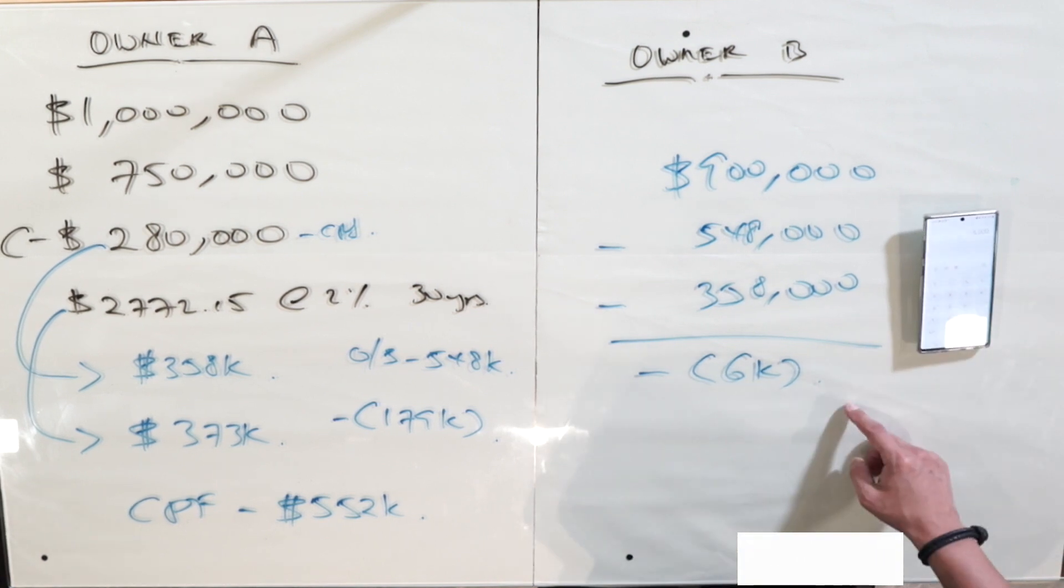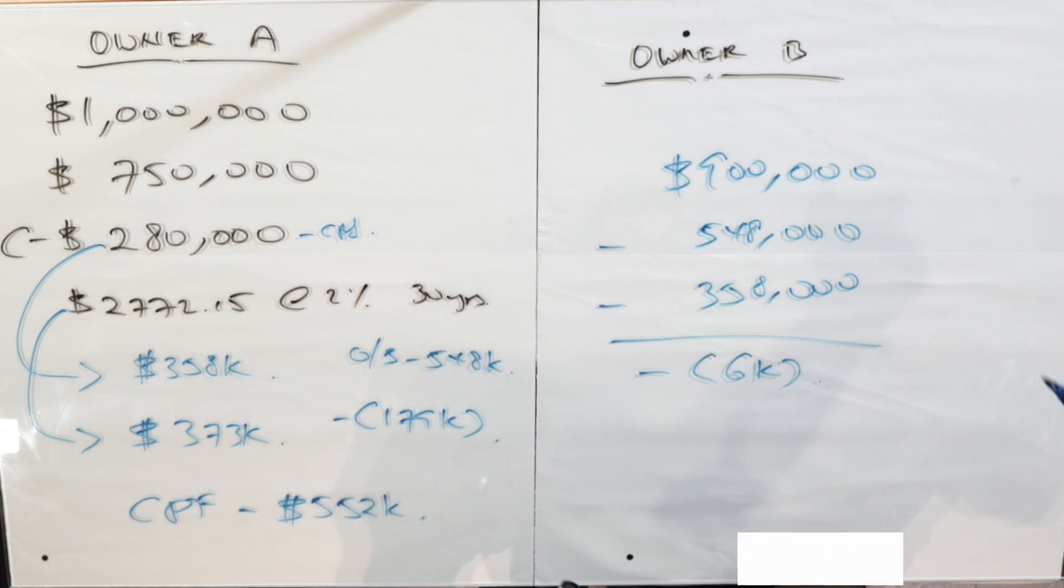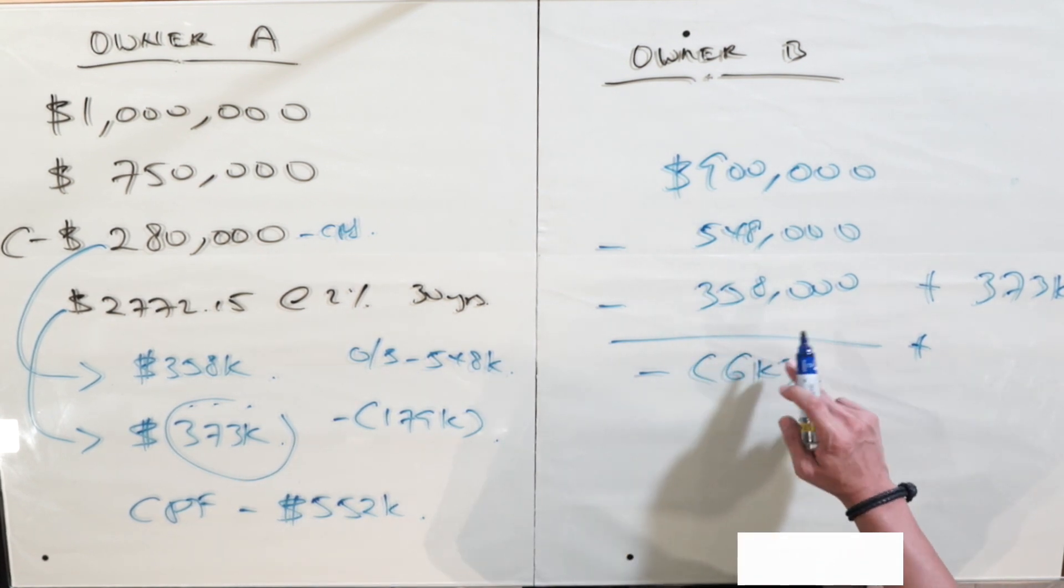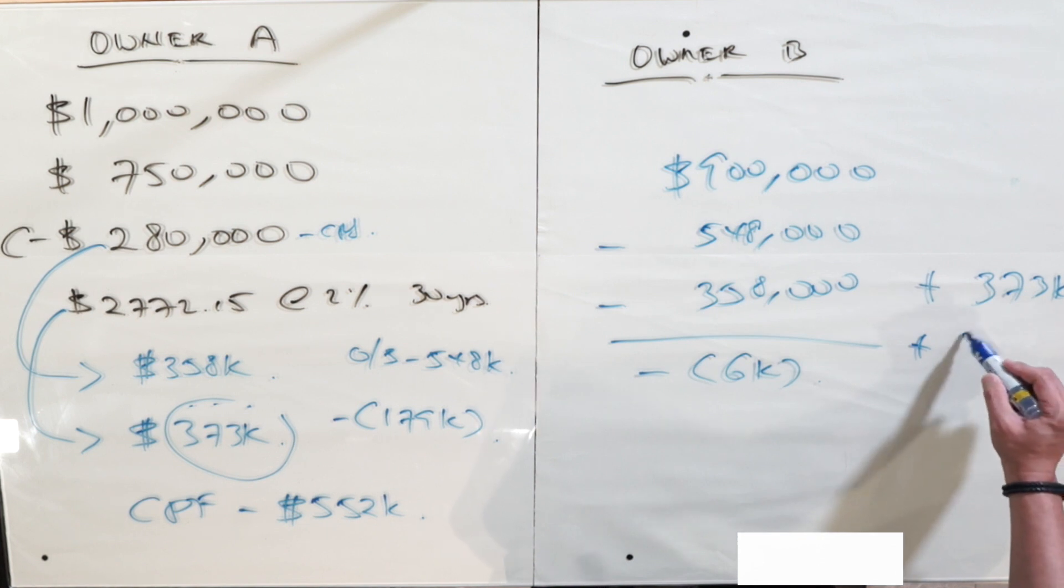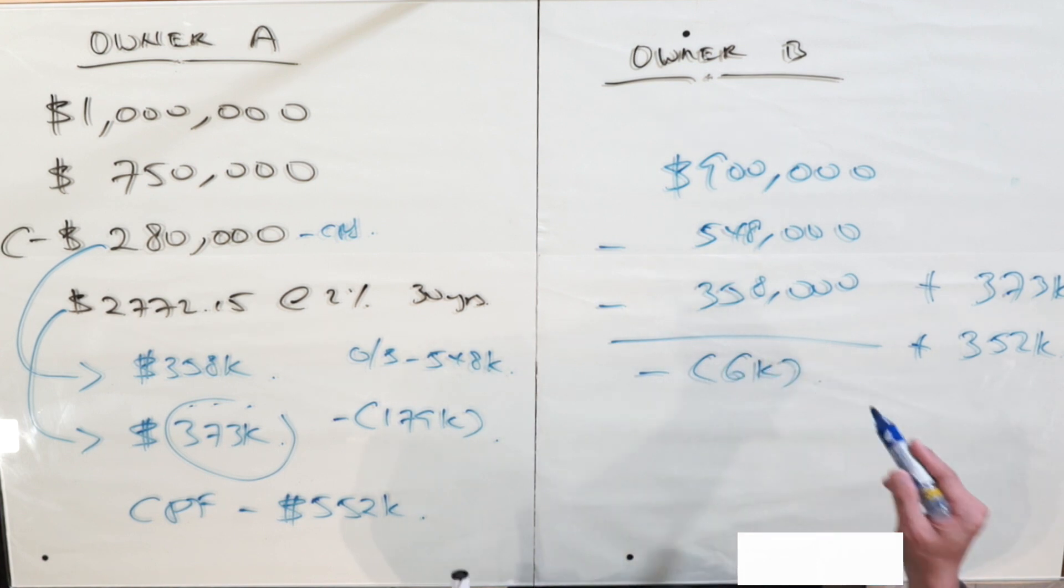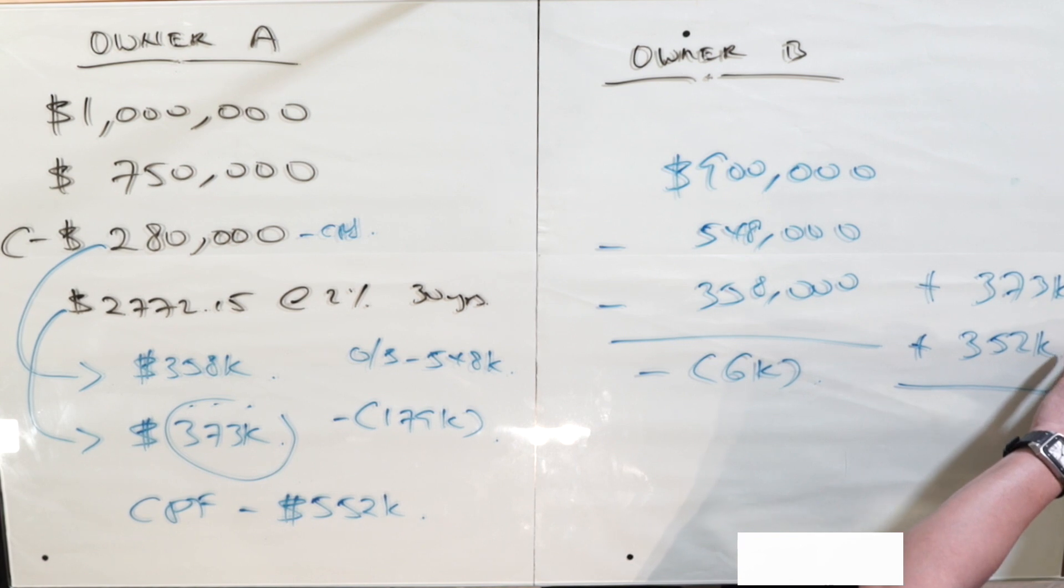So here he gets negative $6,000, but what he had working for him in the CPF, every single month, has now increased up to $373,000. In his CPF, he will have $373,000 plus he managed to return a total of $352,000 into his CPF. So because it's a negative sale, instead of $358,000 going into owner B's CPF account, he only has $352,000 going inside. So the total he will have here would be $725,000.